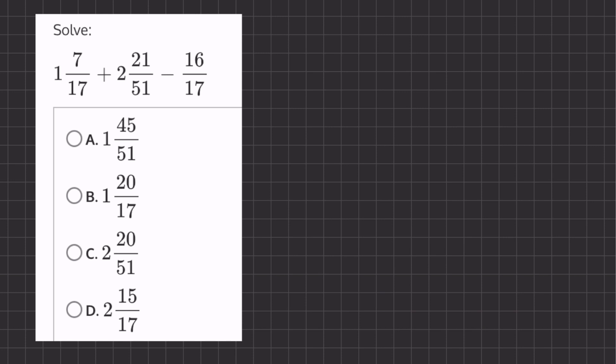So to begin, we'll turn these mixed numbers into improper fractions, and we'll do so by taking this denominator, multiplying it by our whole number, and then adding that to our numerator. So it's going to look like this. We'll have 17 times 1, which is 17, plus 7, which will give us 24 over our common denominator of 17.